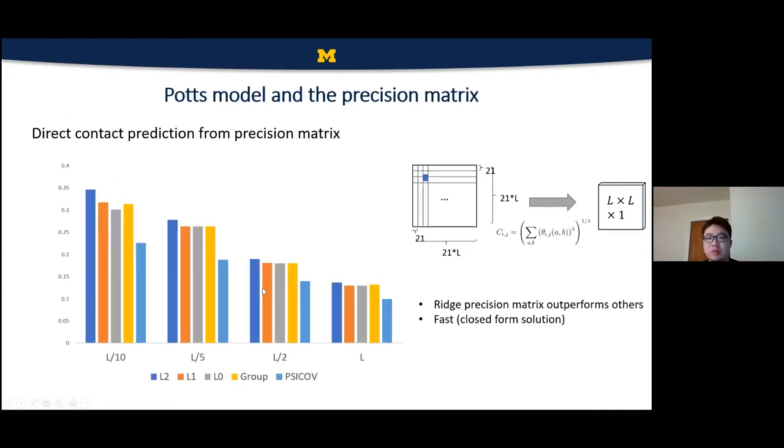And now we show the performance of different kinds of precision matrix estimation. The contact is directly predicted from the precision matrix here. The precision matrix has a shape of 21 times L by 21 times L. And each sub-matrix with a shape of 21 by 21 can be used by a post-process, which is a norm of the sub-matrix. And the norm can be considered as the predicted contact map. So the long range top n precision shows actually that the ridge precision matrix has better performance for such data set.